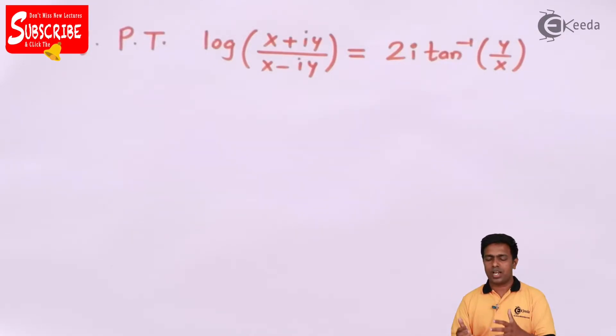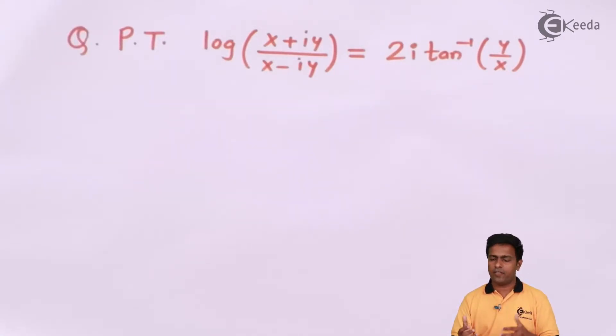To start with the answer, if you observe the left hand side, there we have two complex numbers, one in numerator and one in denominator, but outside that we have a log. This reminds me about one of the property of logarithm that is log of a upon b, which is log of a minus log of b. I am going to apply that property on the LHS first.